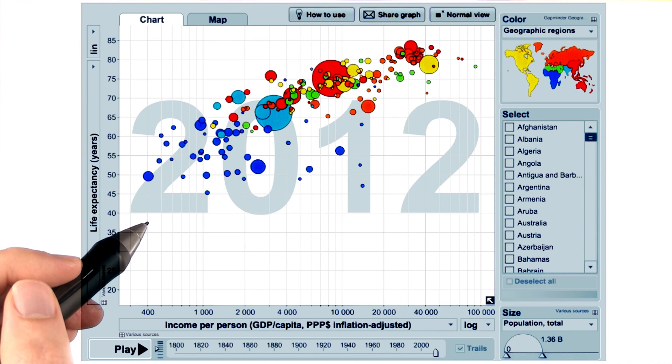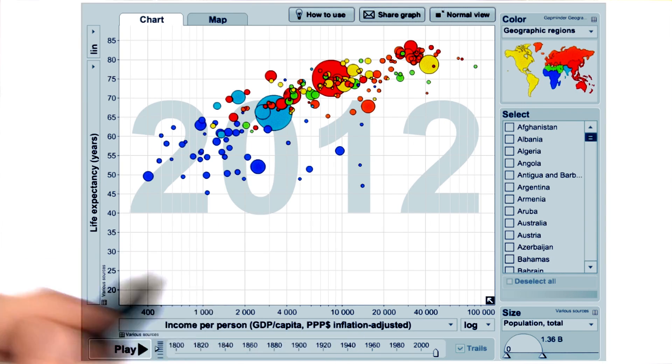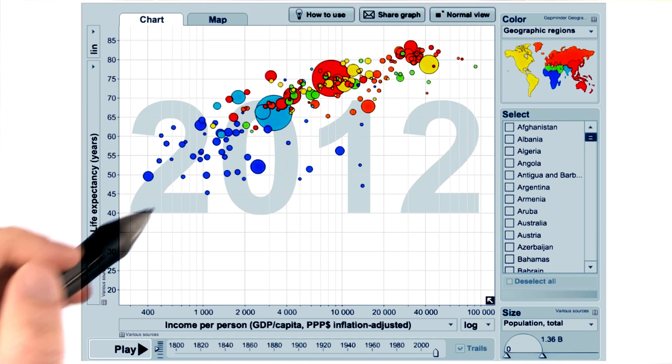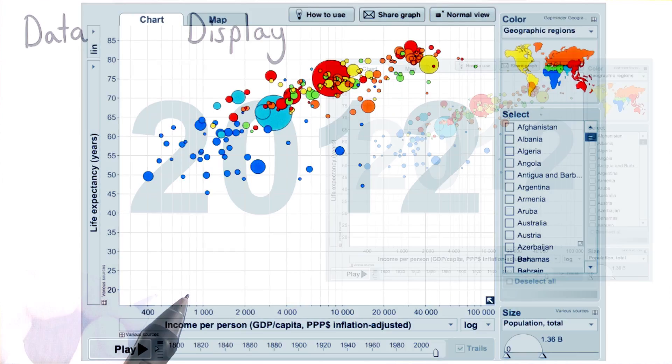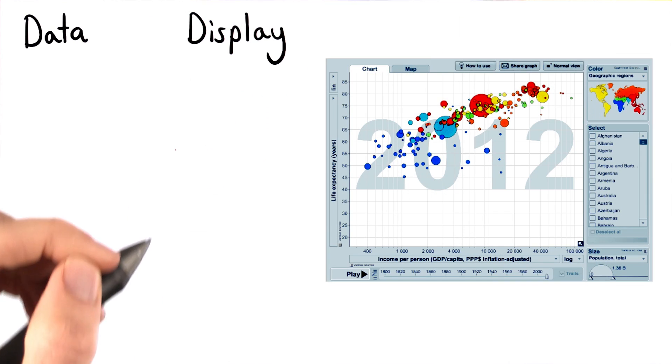The visualization that we saw before shows the correlation between income per person and life expectancy in many different countries. This graphic is rich with visual encodings. Let's take a look at some of those visual encodings now.